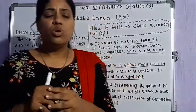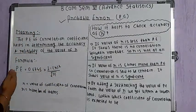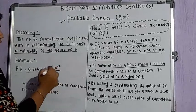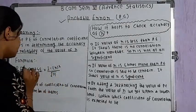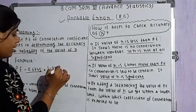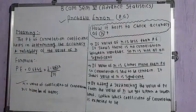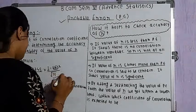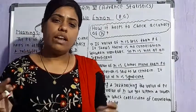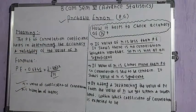Now we will see how probable error is calculated. For calculating the probable error we have a formula. PE is equal to 0.6745 multiplied by (1 minus R squared), divided by the square root of N. Here, 0.6745 and 1 remain constant in the formula. R refers to the value of the coefficient of correlation calculated from the given data, and N refers to the number of items given in the series.